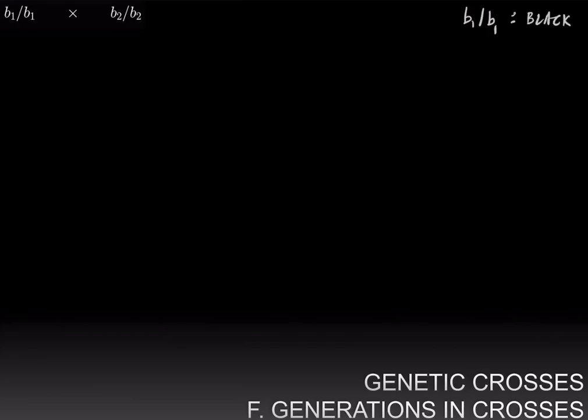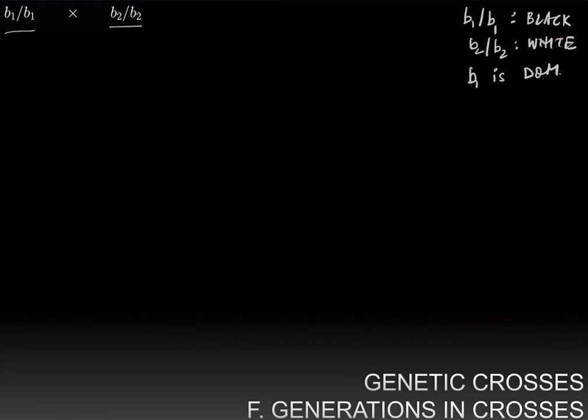Let's keep working with the example of the black and white mice where B1 over B1 are black, B2 over B2 are white, and B1 is dominant. In particular, we are going to discuss the naming of generations and crosses. Here we have a particular cross between two pure breeding lines. We know these individuals are pure breeding because they're homozygous either for the B1 allele or the B2 allele.